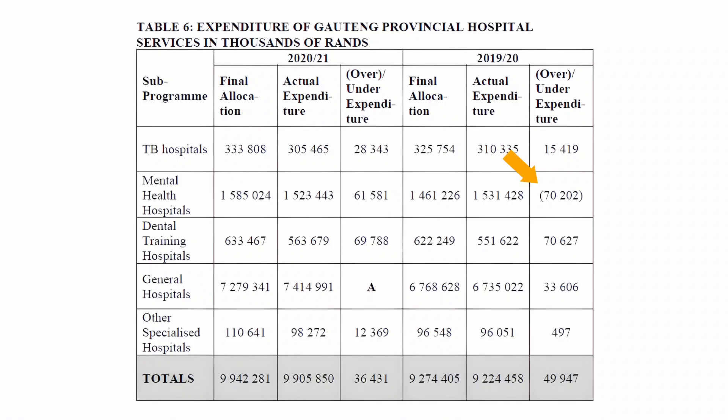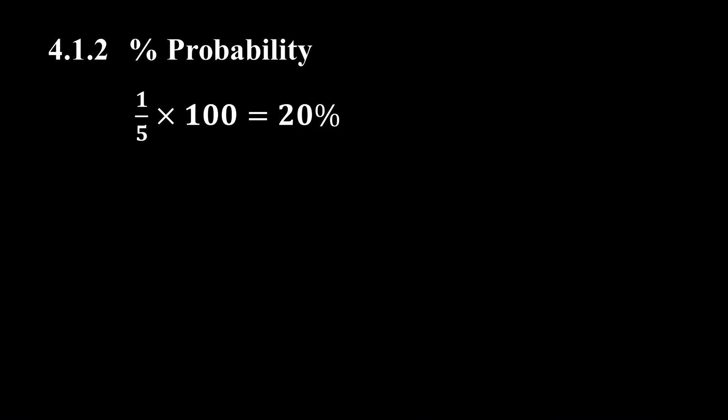From the column for the 2019-2020 tax year, we see that mental health hospitals was the only sub-program that overspent in the 2019-2020 tax year, out of a total of five sub-programs. Note that brackets are used to indicate overspending. So the probability of selecting this sub-program as a percentage is 1 divided by 5 multiplied by 100, which equals 20%.